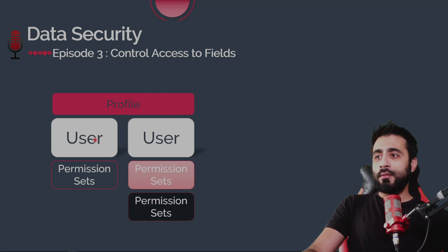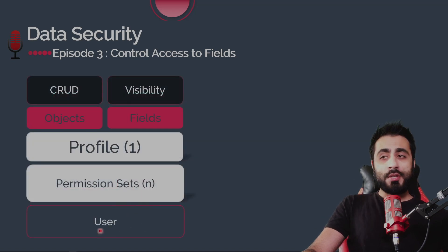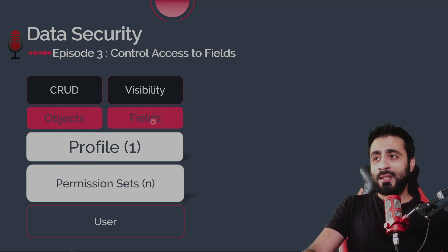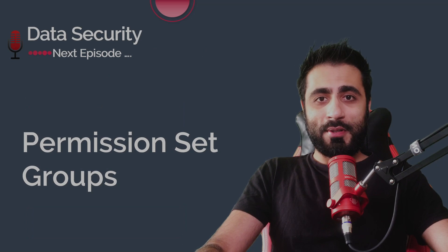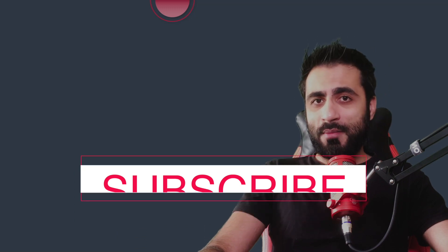To sum up: each user can have only one profile, and a user can have a set of permission sets — as many as you want — to give extra extended permissions besides the profile. Both the profile and permission set allow you to manage CRUD access to objects and visibility and edit access to fields. On the next episode we're going to talk about permission set groups. If you missed the first two episodes of Data Security, have a look at episode 1 about controlling access to org and episode 2 about controlling access to objects. If you like the content, don't forget to subscribe. Thank you for watching — see you next time.